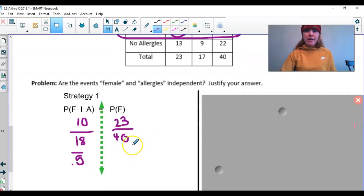So now what I'm going to do is I'm going to take 23 divided by 40, and that gives me 0.575.